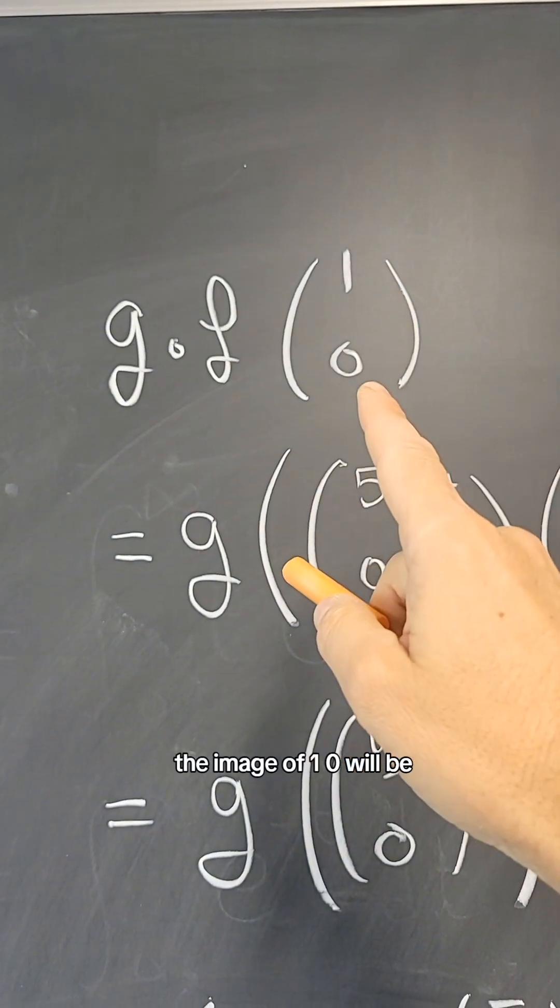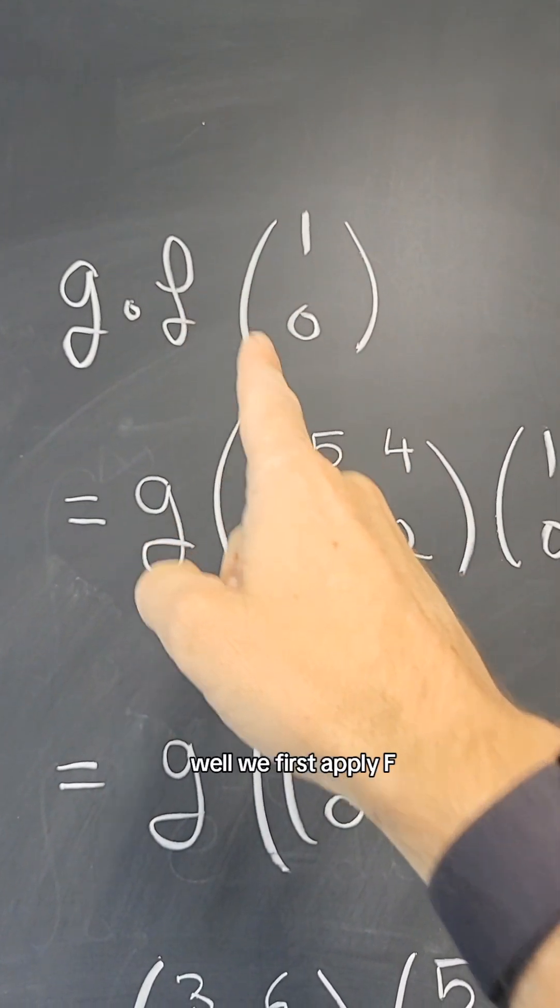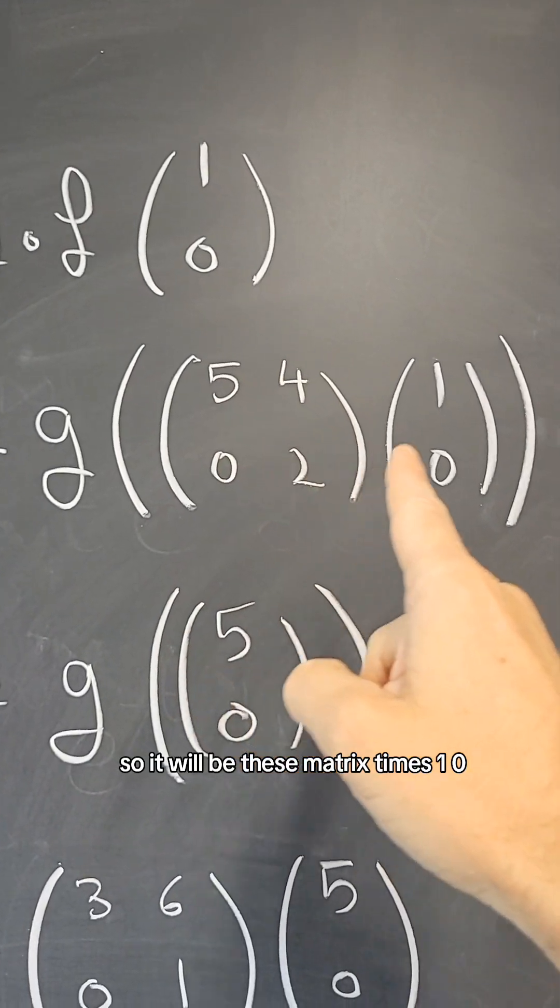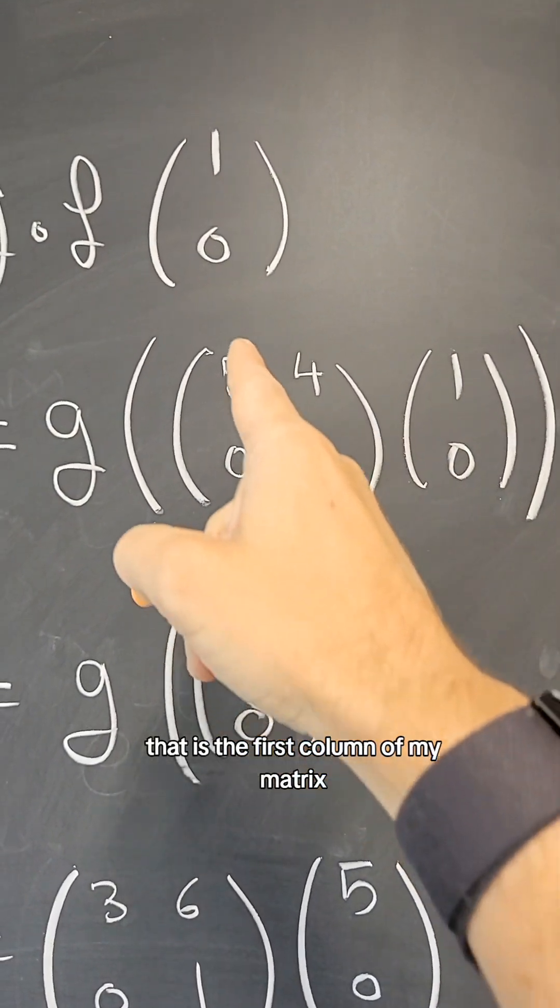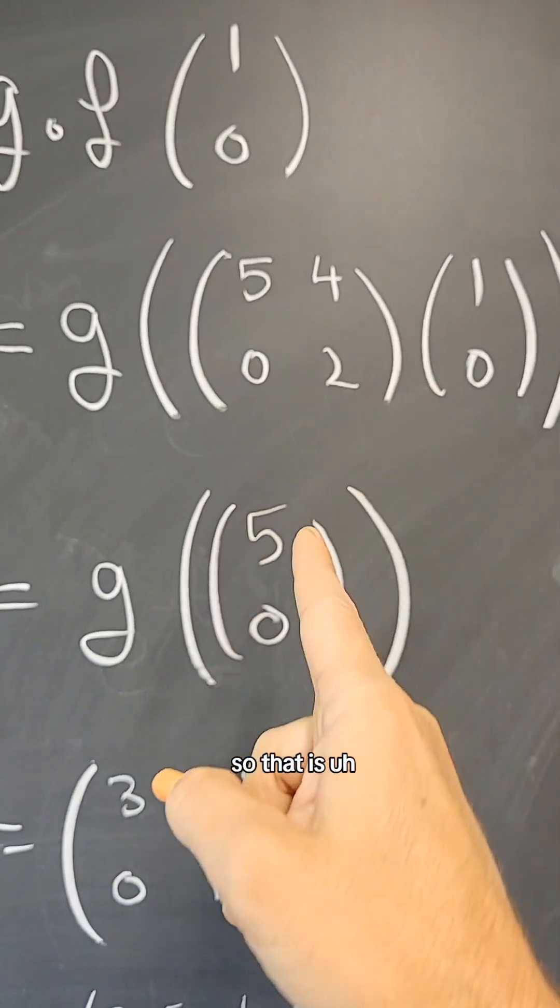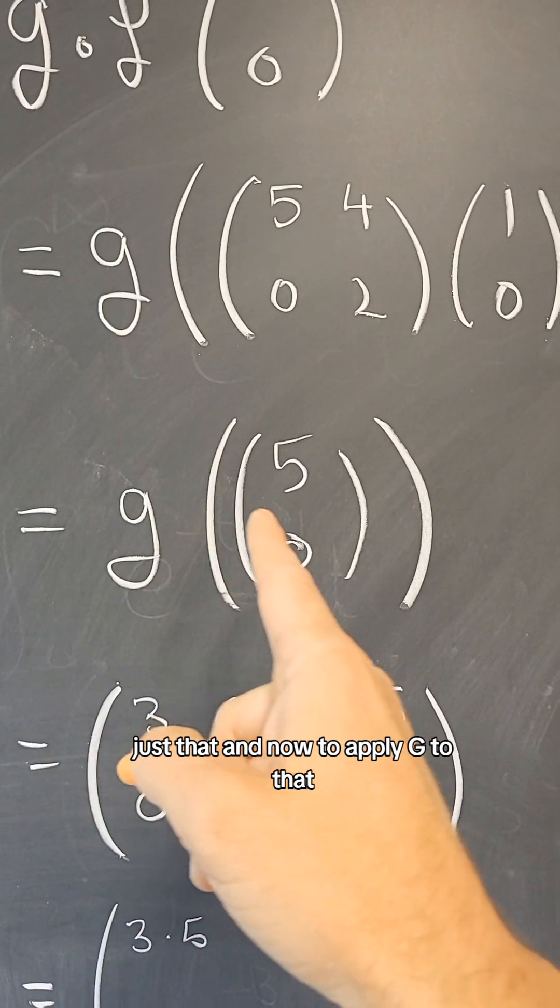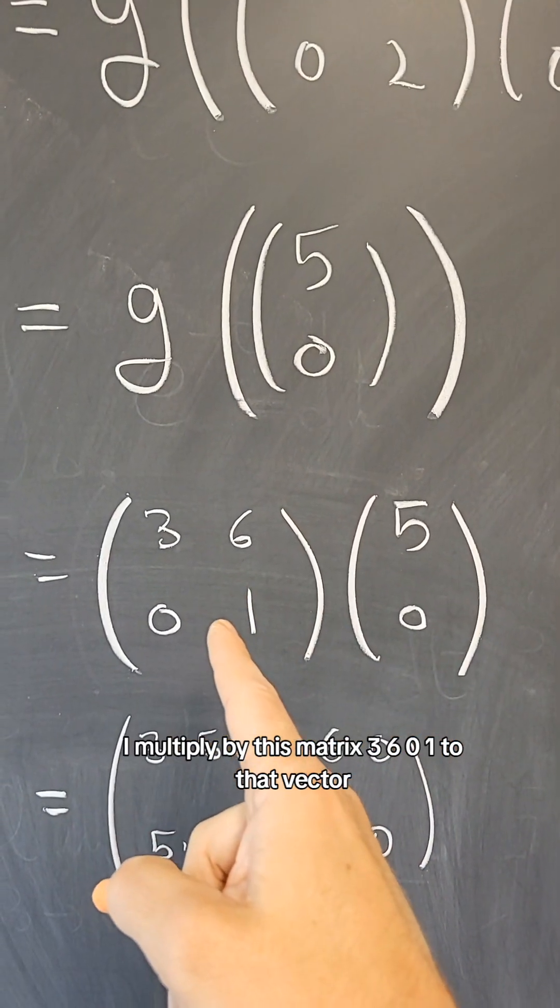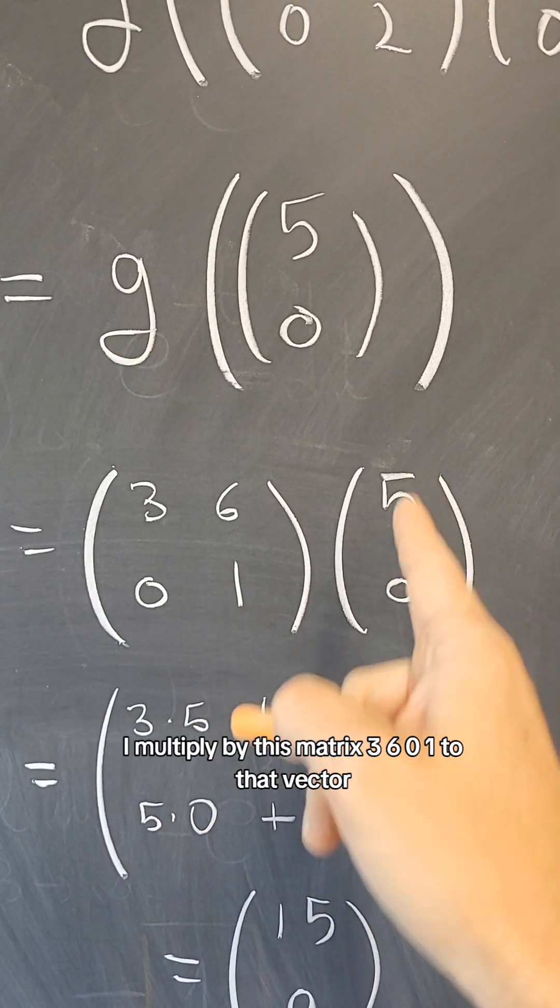The image of (1, 0) will be, well, we first apply F, so it will be this matrix times (1, 0). That is the first column of my matrix, so that is just that. And now, to apply G to that, I multiply by this matrix (3, 6, 0, 1) to that vector.